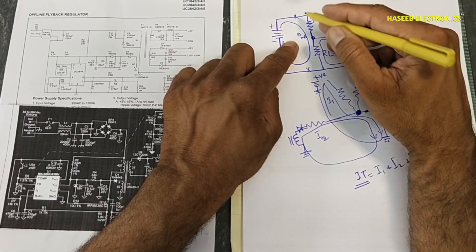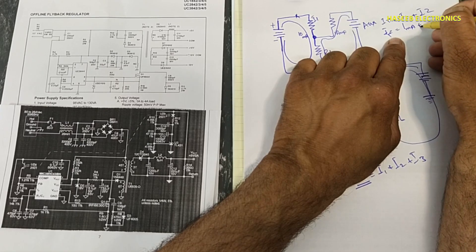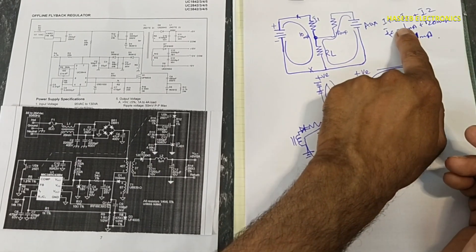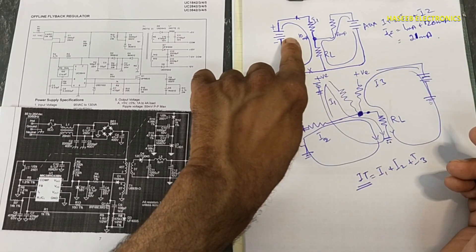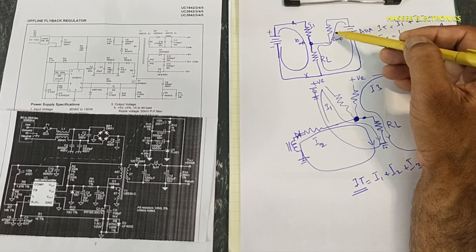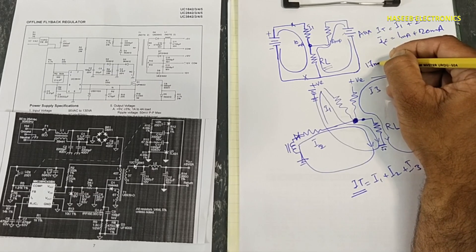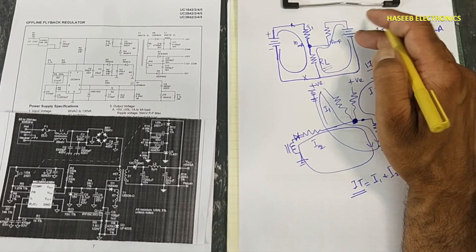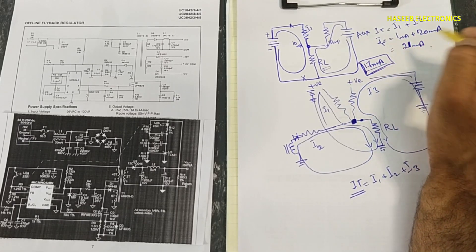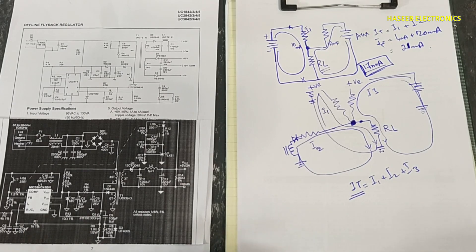For example, I1 from the startup resistor plus I2 from the auxiliary winding: one milliampere plus 20 milliampere equals 21 milliampere total. Another scenario: this circuit can provide one milliampere, this circuit can provide 500 milliampere, and our load resistance can drive just only 17 milliampere. Voltage is present and the source is capable of driving up to 500 milliampere, but the circuit will consume only what the load resistance requires. If you enjoyed this video, hit the like button; if you have any questions, please write in the comments. Thanks for watching.